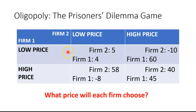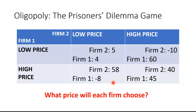On the other hand, if firm one chooses the low price and firm two chooses the high price, then firm two ends up with a loss and firm one ends up with large profits. Presumably, if firm one chooses the low price, it takes a lot of customers away from firm two, leaving firm two with losses while firm one ends up with large profits. So let's consider which price each firm is going to choose.